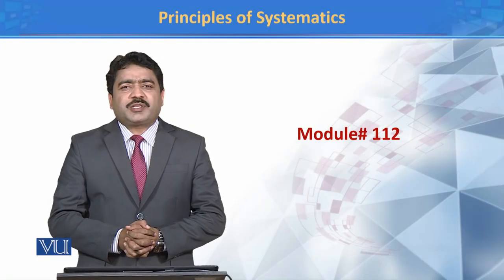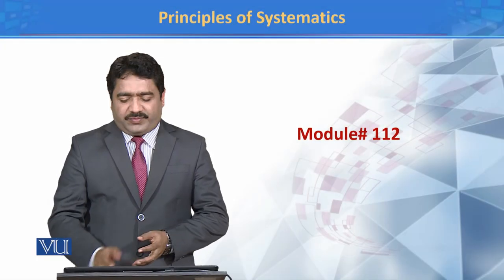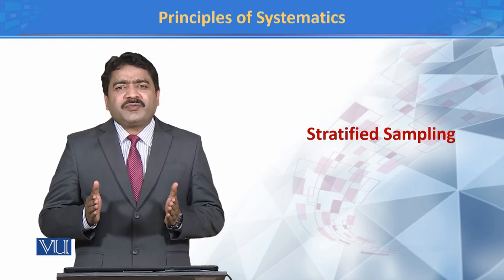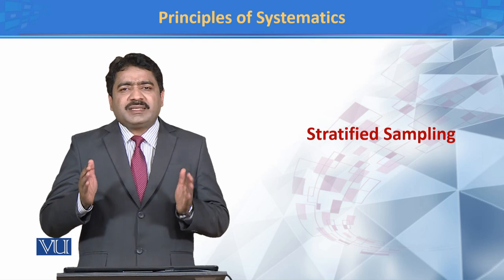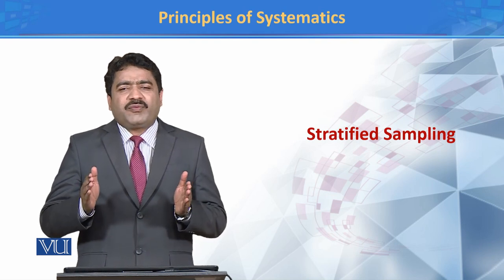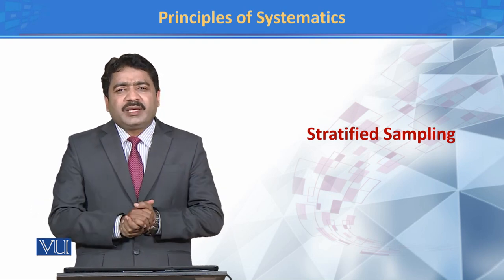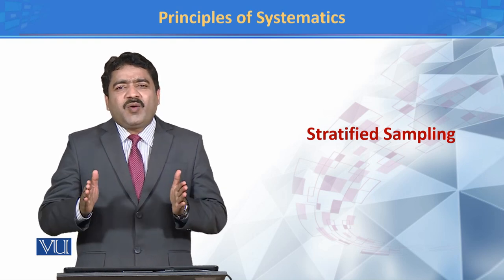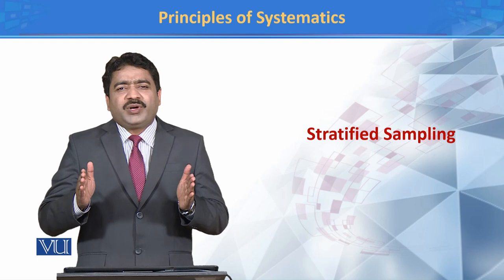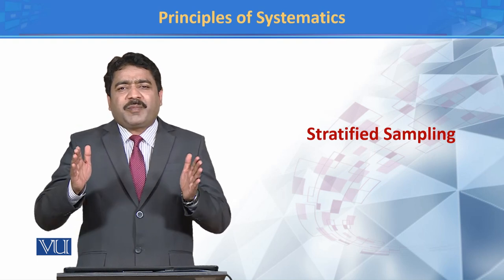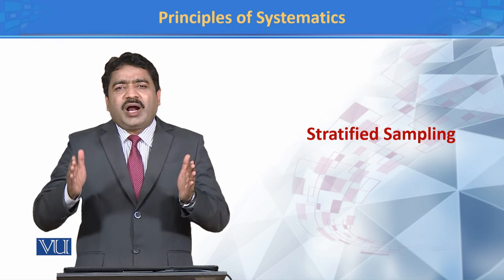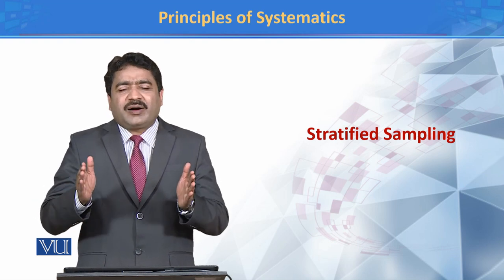Principles of Systematics Module 112 — Stratified Sampling. Stratified Sampling is basically a type of probability sampling. In this type of sampling, we divide our target population into various groups. We call these groups strata.